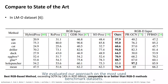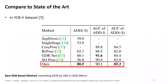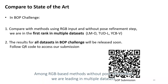We evaluated our approach on the most used benchmark datasets. On the Linemod Occlusion dataset, Zebra Pose is the best RGB-based method, exceeding state-of-the-art by 14%. Similar improvement is shown on YCB-Video as well. We also evaluated Zebra Pose in the BOP challenge, where among RGB-based methods without pose refinement, we are leading in multiple datasets.